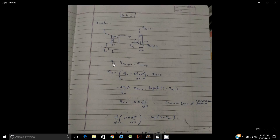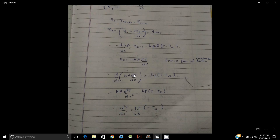So q_x minus q_{x+dx} is equal to q constant. The basic idea of differential equations is we convert q_{x+dx} as q_x plus the total small differential change into the small differential element. We replace q_x with minus k·A·dT/dx, and on solving we get d²T/dx² equal to h·P/(k·A) times (T minus T_infinity).